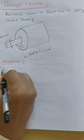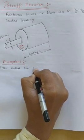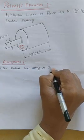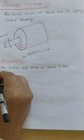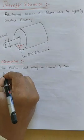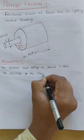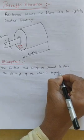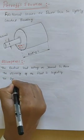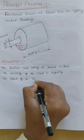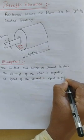The first assumption is we assume that the radial load acting on the journal is zero. The second assumption is the viscosity of the fluid is equal to infinity. The third assumption is the speed of the journal is assumed to be infinity. These are the three assumptions that we make in deriving Petroff's equation.